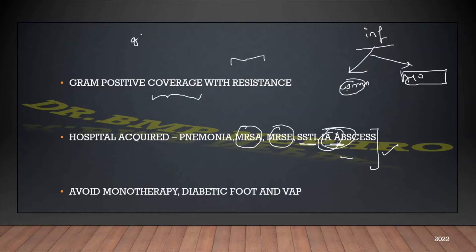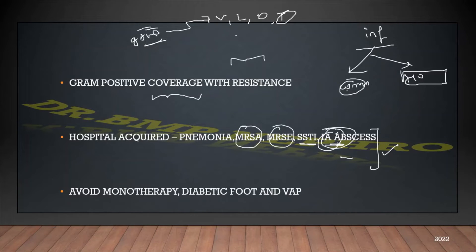When gram positive organisms have resistance, the alternatives were vancomycin, linezolid, and daptomycin. So tigecycline is also one of the alternatives — it is not a primary drug. They have also mentioned to avoid monotherapy with this drug even though it is a broad spectrum antibiotic.